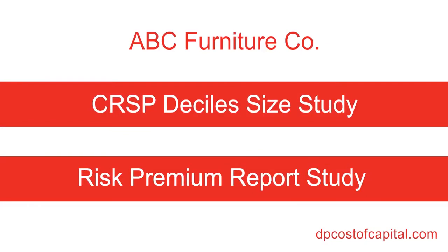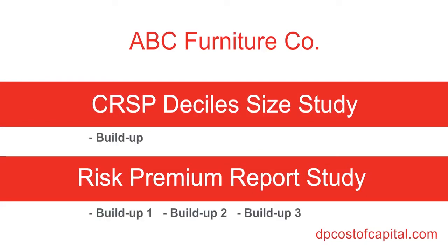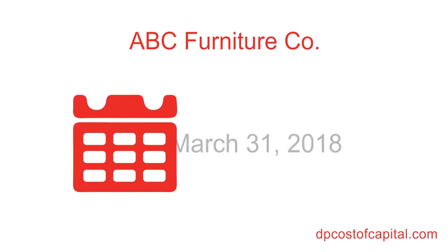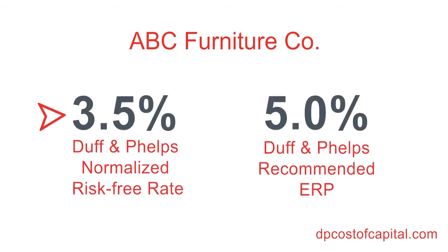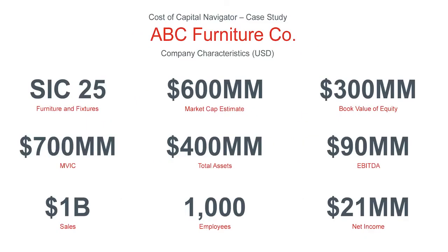We will be estimating the cost of equity for ABC Furniture using various build-up methods. If we wanted to use the Capital Asset Pricing Model, or CAPM, that is also available in the Cost of Capital Navigator. For this case study, the valuation date is March 31, 2018. We will be using the Duff & Phelps normalized risk-free rate of 3.5% and the Duff & Phelps recommended ERP of 5% as of our valuation date. ABC Furniture is a private company operating in SIC 25 Furniture and Fixtures, with an estimated market cap of $600 million, book value of equity of $300 million, and $1 billion in sales.